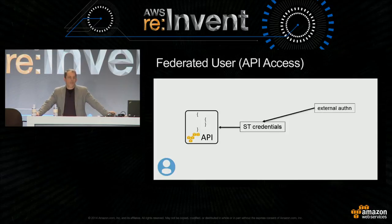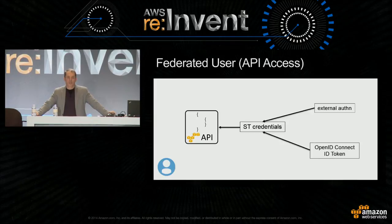For API access, you just authenticate externally and get some short-term credentials. But now you can also use OpenID Connect to grab an OpenID token and then grab short-term credentials. I'm going to walk you through that.